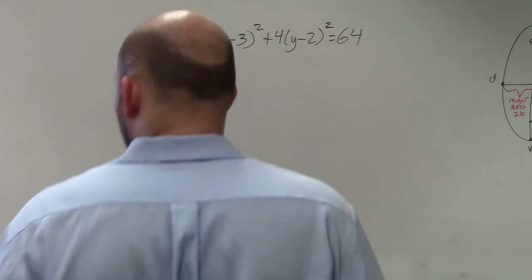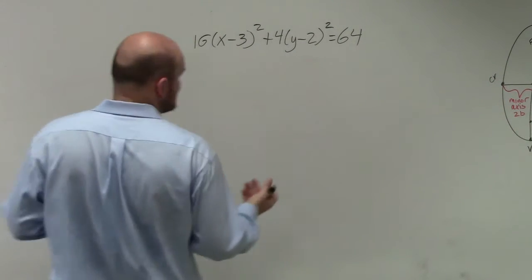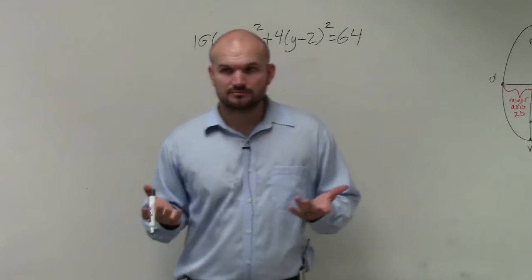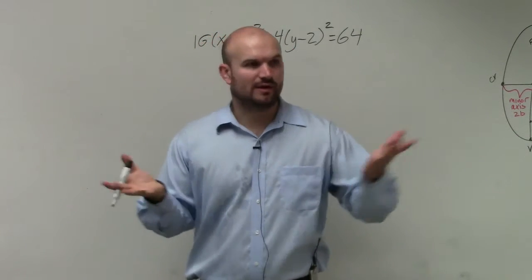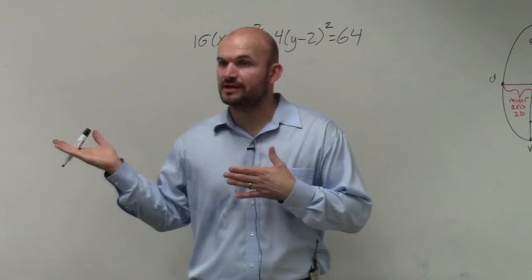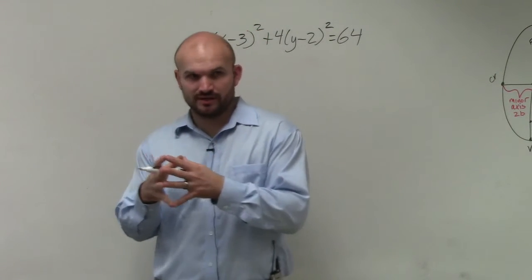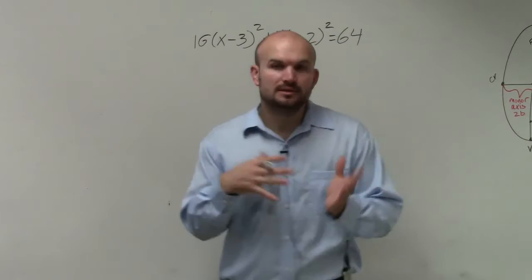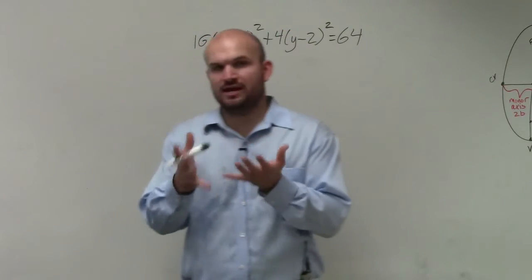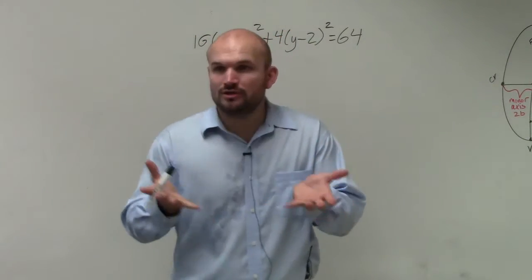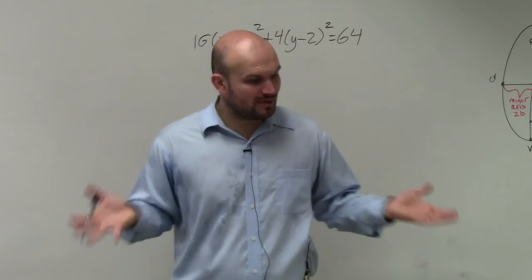The first important thing to understand is when we look at our equations, the standard form is always x minus h squared over a or b, plus y minus k squared over a or b, and that equals 1.